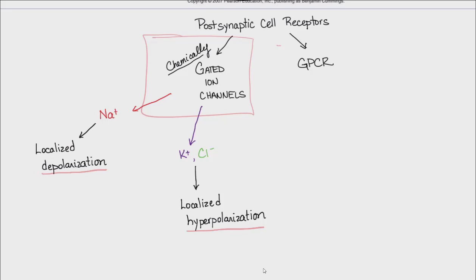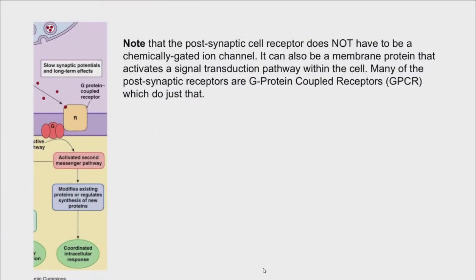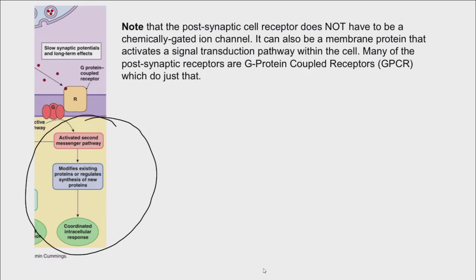Now let's consider that the postsynaptic cell receptor is a G-protein coupled receptor. What is the response? G-protein coupled receptors activate all kinds of pathways. The key takeaway is that if the postsynaptic receptor is a G-protein coupled receptor and not a gated ion channel, the cellular response is not usually a change in the membrane potential.